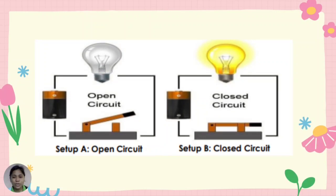In setup A, there is a gap or no complete path from one end of the circuit to the other end. For this reason, electricity does not flow. While in setup B, a wire is attached to the negative end of the battery, while the other wire is attached to the positive end. Both wires are attached to the bulb. Such a circuit is called a closed circuit. A closed circuit makes the bulb light up because the path of electricity is complete.